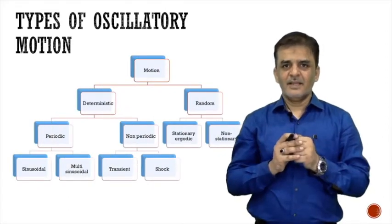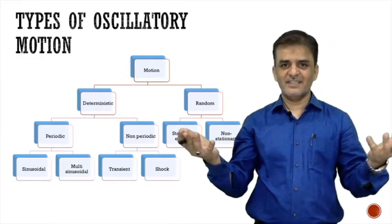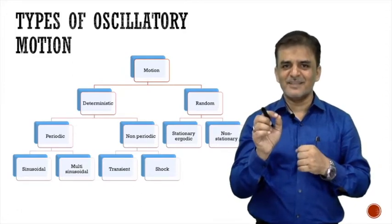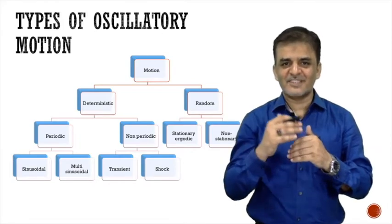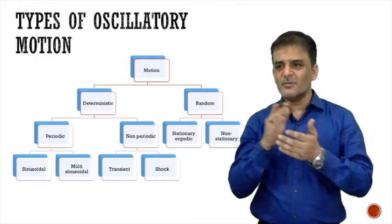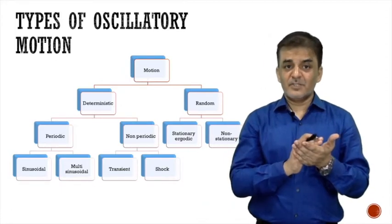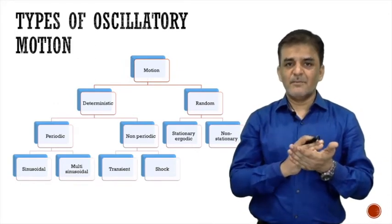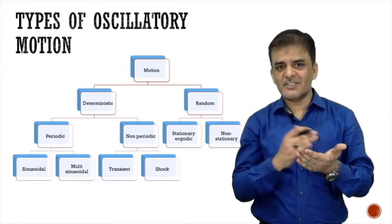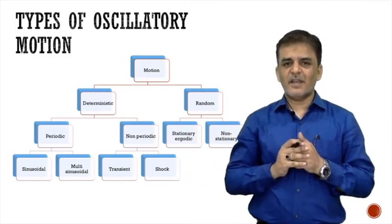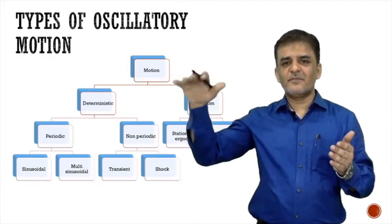The movement of the body can be deterministic or random. As explained in probability and statistics, randomness is a limitation of our mind — when knowledge is limited to understand reasons, we call it random. Deterministic motion can be periodic or non-periodic. Random motion can be further divided into stationary — maintaining the same nature over time — or non-stationary.